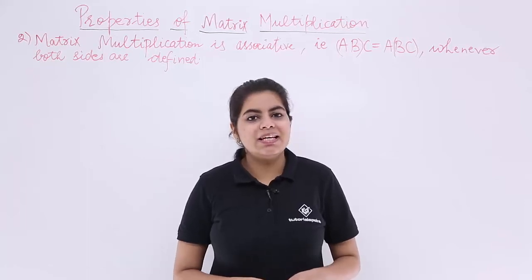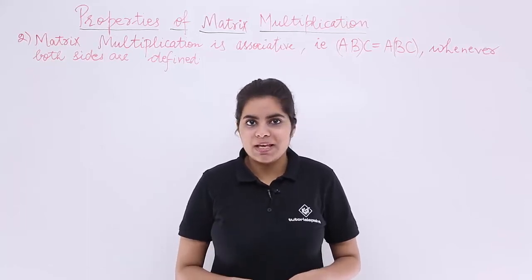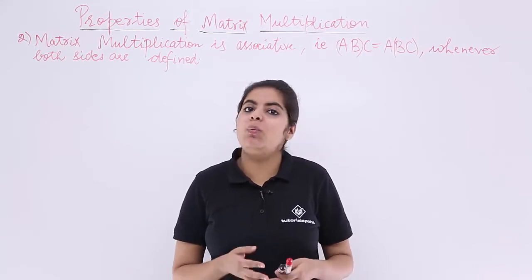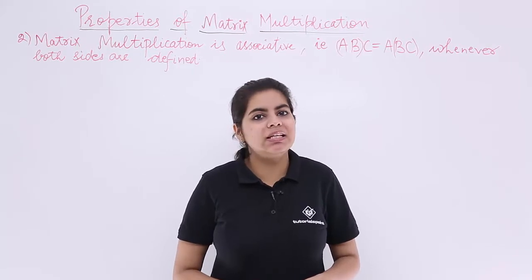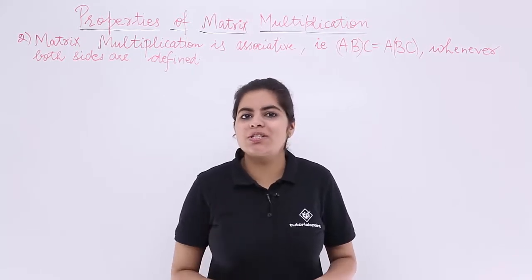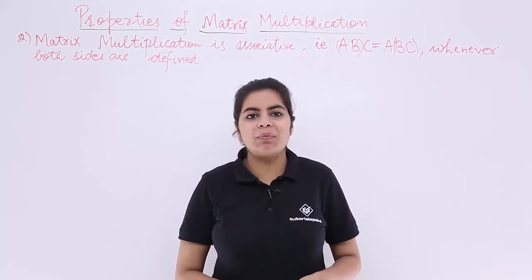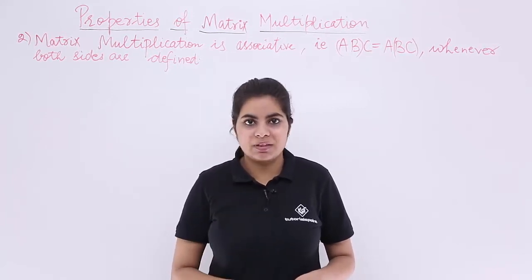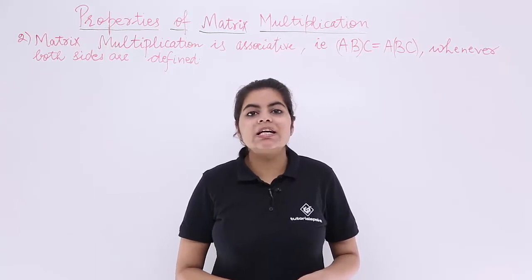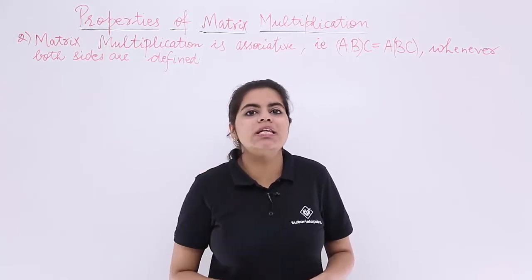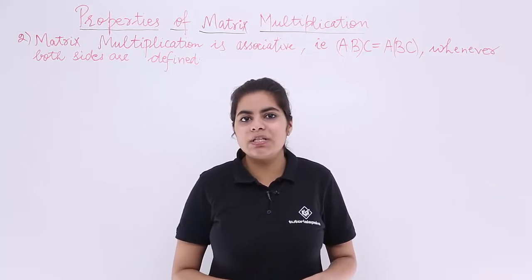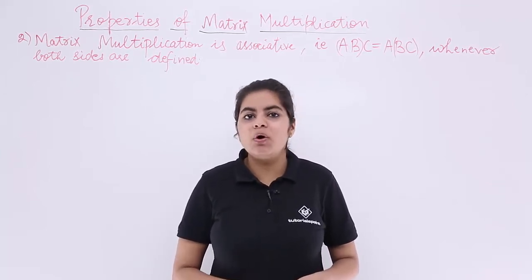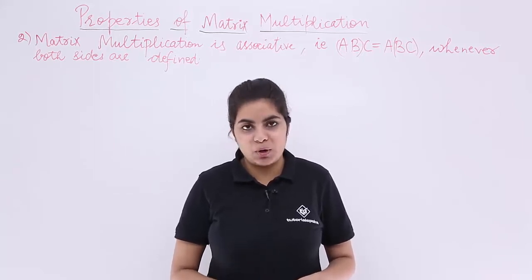In this video, let's see another property based on the concept of matrix multiplication. We already know what matrix multiplication is and we have seen in our previous video the first property based on the same concept. In this video, we are going to study the second property. The second property is associated with associativity. Let's see what the property is and then we will see a numerical problem for the same.